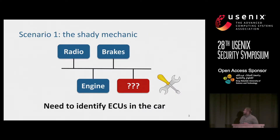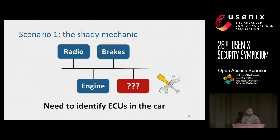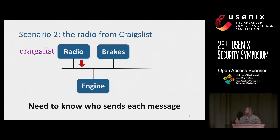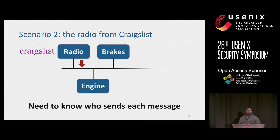Let's look at a few scenarios. Say you take your car to a shady mechanic, and he installs an ECU without your permission. In this case, I would want to know what ECUs are currently in my car. Maybe you buy an aftermarket radio from some guy on Craigslist, and that radio is actually transmitting new messages onto the network that you did not expect. At this point, I would want to know what devices are sending what messages.